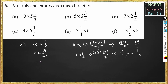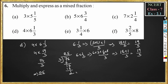Now 4 into 6¹/₃ becomes 4 into 19/3. 4 into 19 is 76, divided by 3. To convert to a mixed fraction, we divide 76 by 3: 3 twos are 6, remainder 1; bring down 16; 3 fives are 15, remainder 1. We can't further divide, so we put 25 as the whole number, 1 in the numerator, and 3 in the denominator. The answer is 25¹/₃.